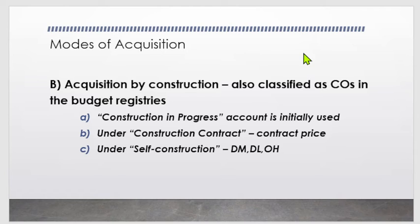Illustration one on page 247: Entity A awards a construction contract to Contractor Z at a contract price of ₱40 million. Upon awarding, Entity A requires a ₱4 million performance bond from the contractor as security. The entry is: debit Cash-Collecting Officer ₱4 million, credit Guarantee/Security Deposits Payable ₱4 million. The performance bond ensures the contractor will perform per the contract; failure to perform can result in forfeiture.